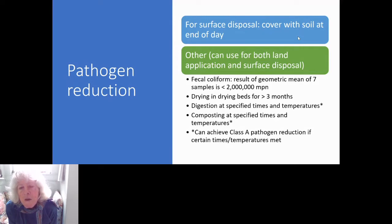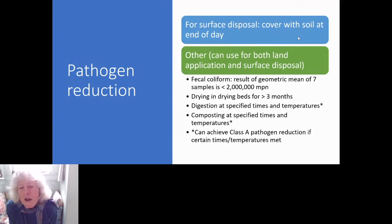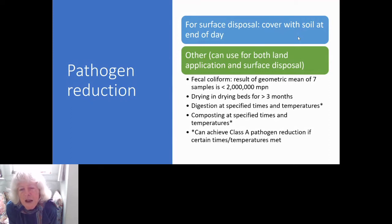The sampling frequency depends on size. For the first 290 dry metric tons (about 320 dry tons) of sewage or septage, you need to run seven samples. Between 290 and 1,500 dry metric tons, you need 14 grab samples. This is specified in 503 — the larger the site, the more frequently or the more samples you need to take. Another option for pathogen reduction is drying in drying beds for over three months.